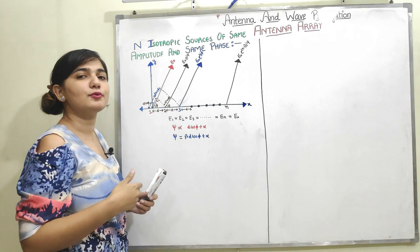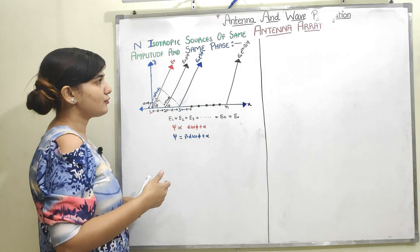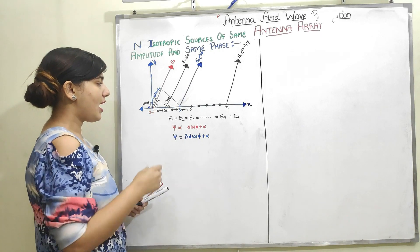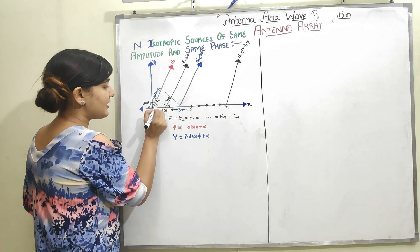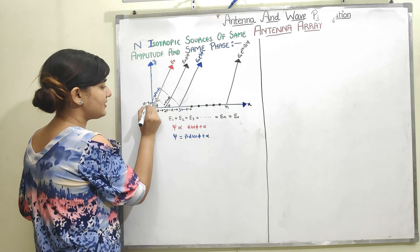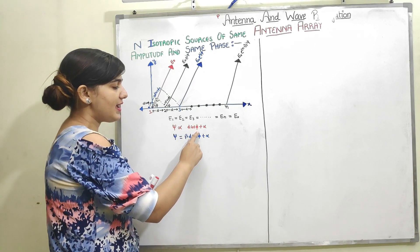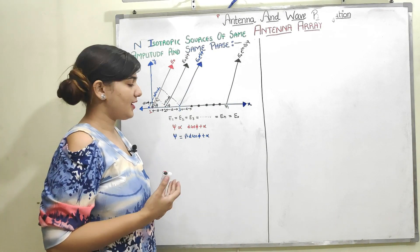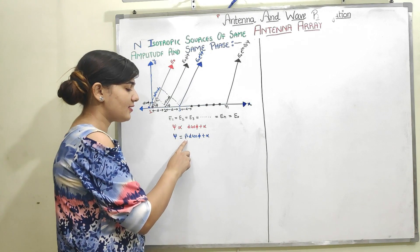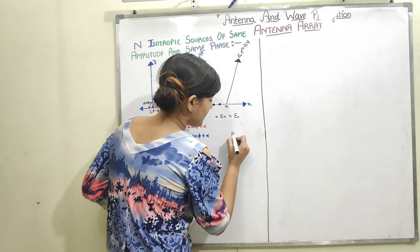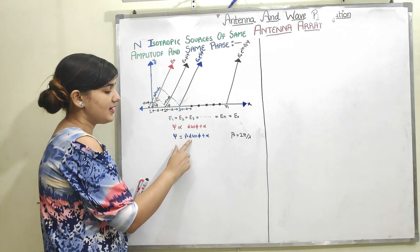I need to calculate this length to find my phase difference. The distance between antenna 1 and antenna 2 is d, and the point is at angle phi. In this right angle triangle, if this length is d and this angle is phi, this base length comes out to be d·cos(phi). So my phase distance is proportional to d·cos(phi) + alpha, where alpha is any additional phase. Removing the proportionality sign introduces the constant beta, equal to 2π/lambda. So the phase angle psi equals beta·d·cos(phi) + alpha.